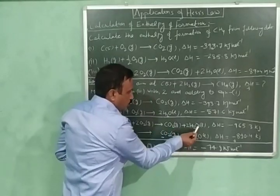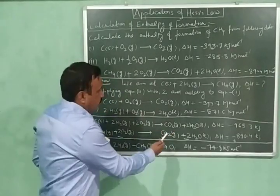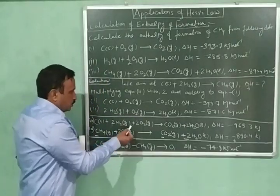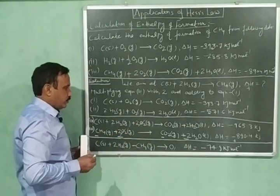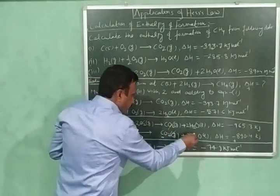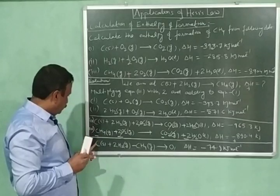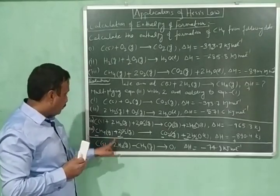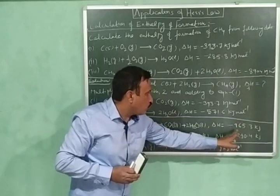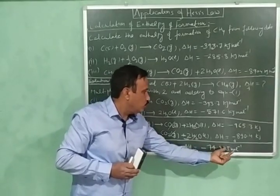CO₂ minus CO₂ equals zero. 2H₂O liquid minus 2H₂O liquid also equals zero, so we are left with zero on the right-hand side — that is, on the product side. On the reactant side, the two moles of oxygen cancel with two moles of oxygen since they have opposite signs. What we are left with on the reactant side is one mole of carbon plus two moles of hydrogen minus one mole of methane equal to zero. The enthalpy change is also calculated, giving us minus 74.9 kJ/mol.